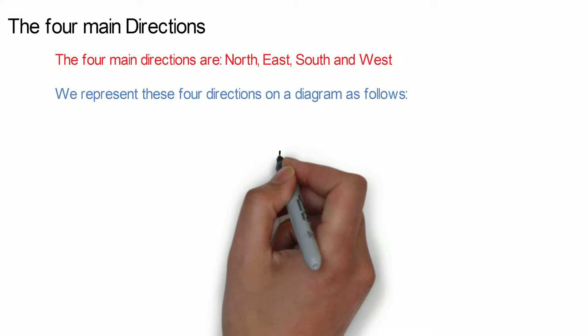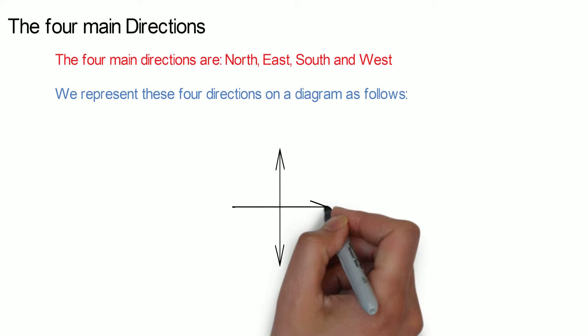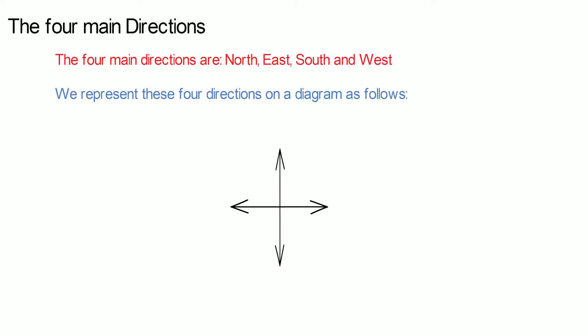We represent these four directions on a diagram as follows. Two arrows crossing each other at 90 degrees, north is up and then in a clockwise rotation, east, south and lastly west.